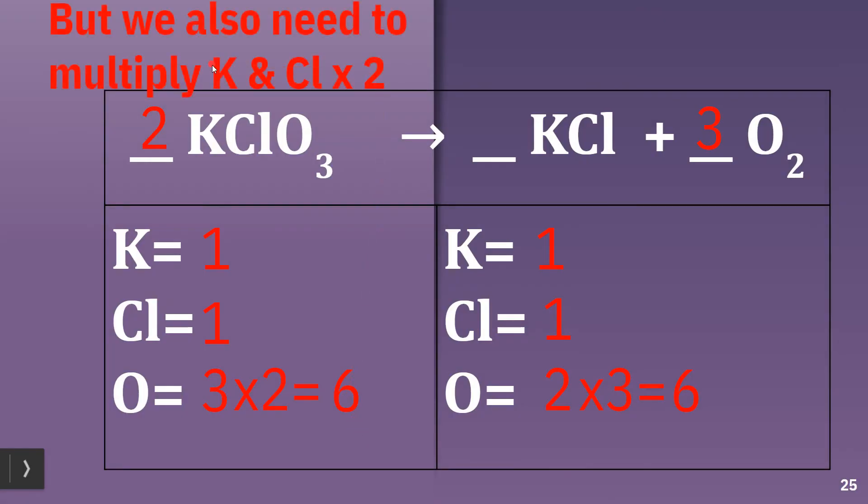But we also need to multiply K, potassium, and Cl, chlorine, times 2. So we'll have to do that here, because this coefficient is not only multiplying times the oxygen times 2, which is 6, but it's got to multiply chlorine and the K, potassium. So potassium 1 times 2 and chlorine 1 times 2, well, that gives us 2 potassium and 2 chlorine. Now this unbalances over here. So we'll have to do some stuff on this side of the equation next.